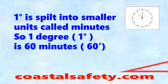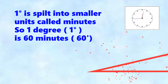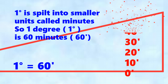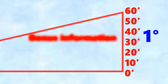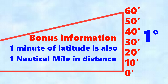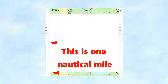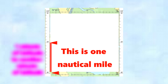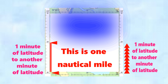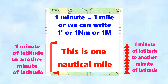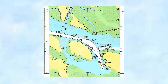One degree is a big unit, so we split it into smaller units — just like a clock where one hour splits into 60 minutes, one degree can also be split into 60 minutes. So one degree and 60 minutes is the same thing as far as angles are concerned. Bonus information: one minute of latitude is also one nautical mile. So between one minute mark and the next is one nautical mile. We can write it as one minute, one mile, one apostrophe, one NM, or one big M.